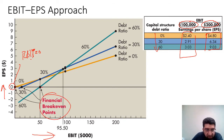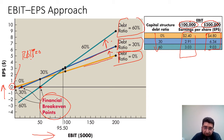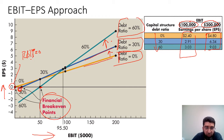Financial breakeven points are shown here for each line, and each line represents a debt ratio. You can see that the higher the debt ratio, the steeper the line. For 0% debt there is no loss. For 30% debt, the breakeven point is a little bit below zero, so there is a risk of the EPS going below zero. For 60% debt, a large portion of the line falls into the negative region.